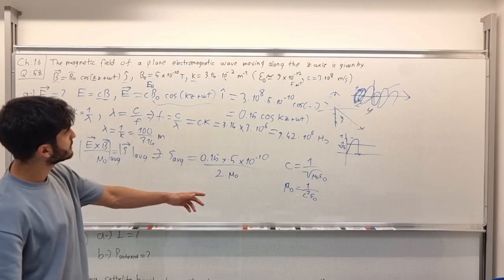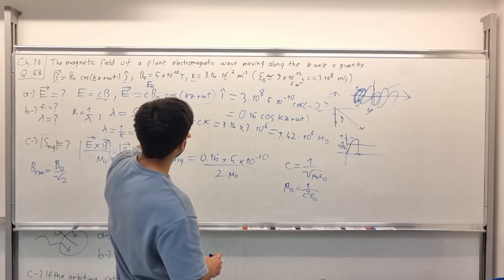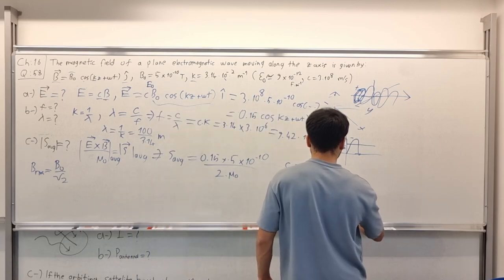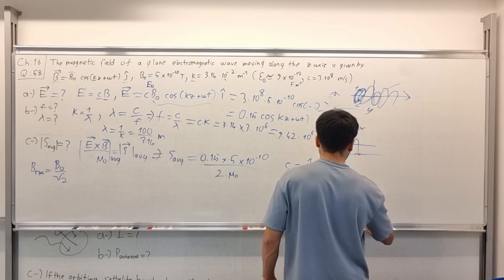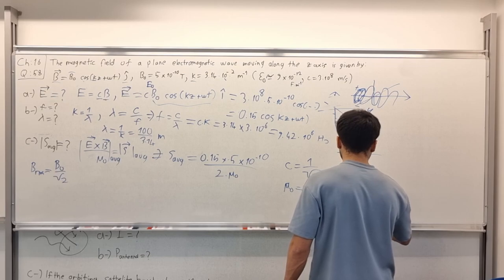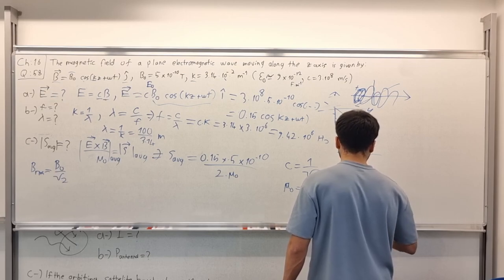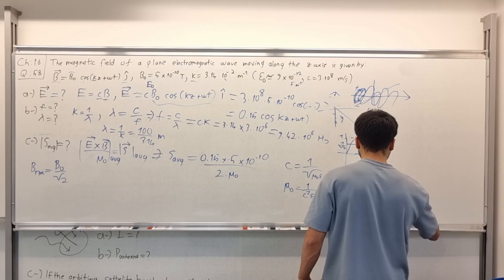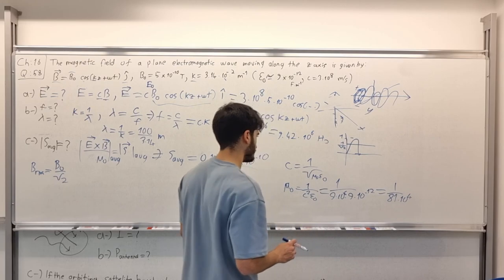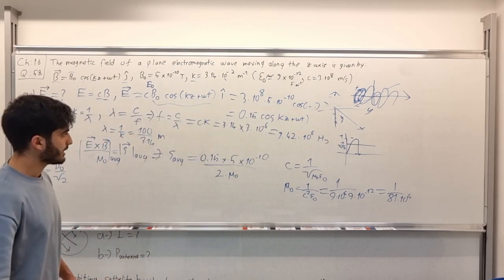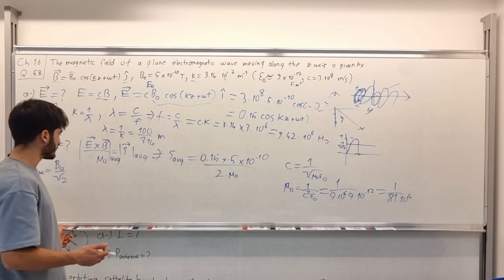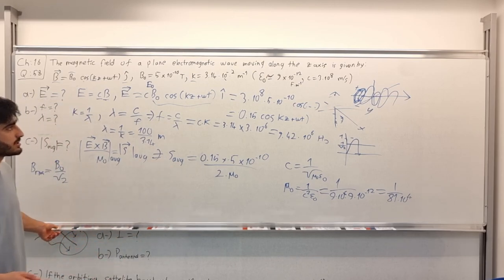Substituting all values gives the numerical answer for the average Poynting vector. This completes this question. Now we have another question from OpenStax University Physics Volume 2, Chapter 16, Question 58.